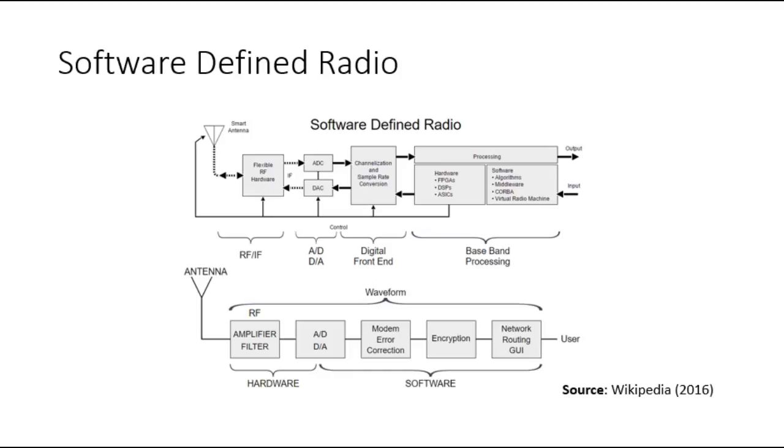As we all know, frequency is a scarce resource. Most of the frequency chunks from 100 MHz to 5 GHz are widely used for several terrestrial applications. Increase in wireless applications has resulted in frequency congestion.